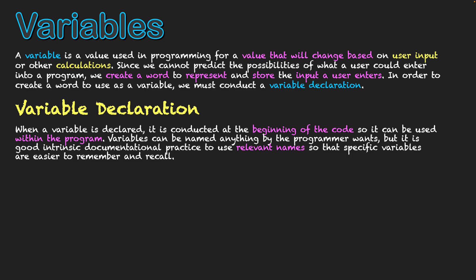Let's look at some examples of variable declaration in different coding languages. In Python, here's declaring the variable 'name'. I've structured it as: name equals input, which means the user is going to enter it. The program will ask the user 'What is your name?' They'll see that, write their name, and it will be stored as 'name'. I can recall 'name' later on and it will bring up whatever name they entered into the system.